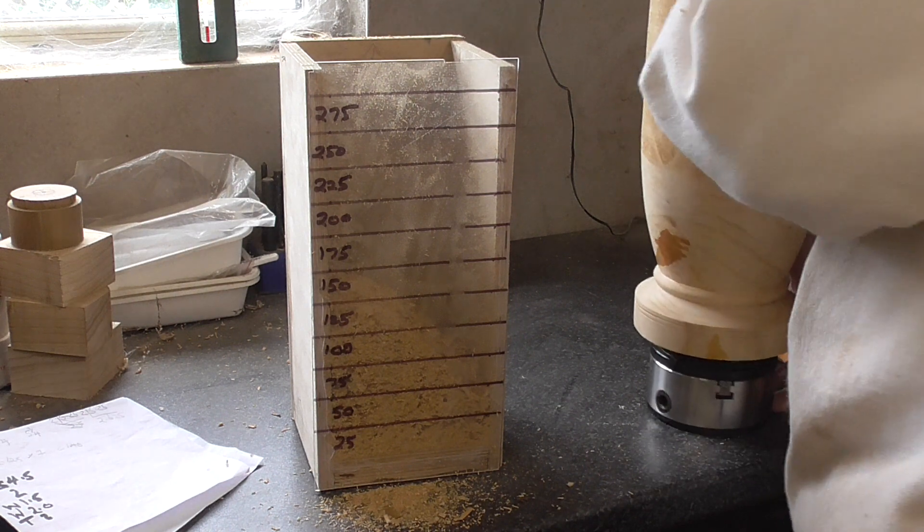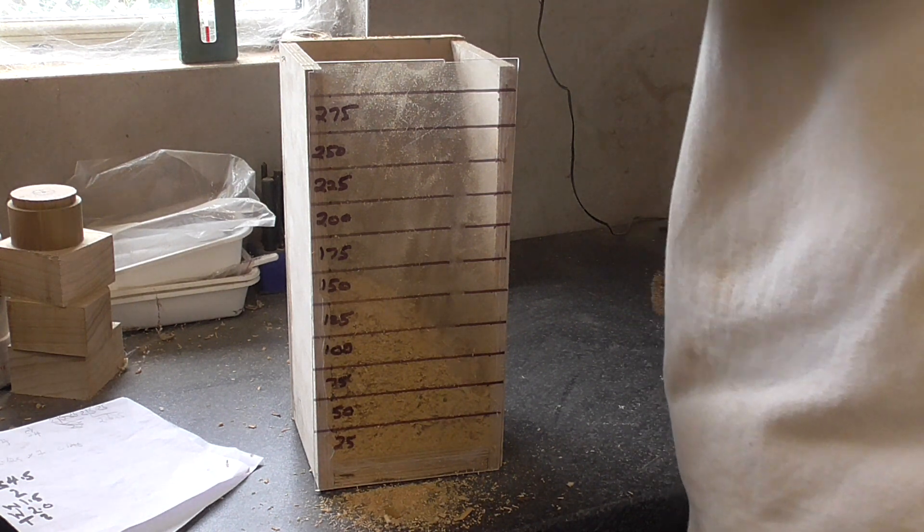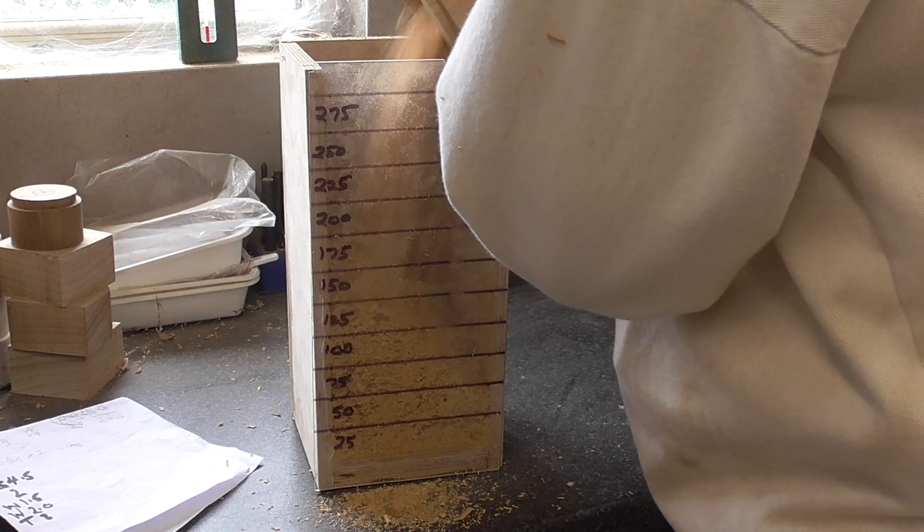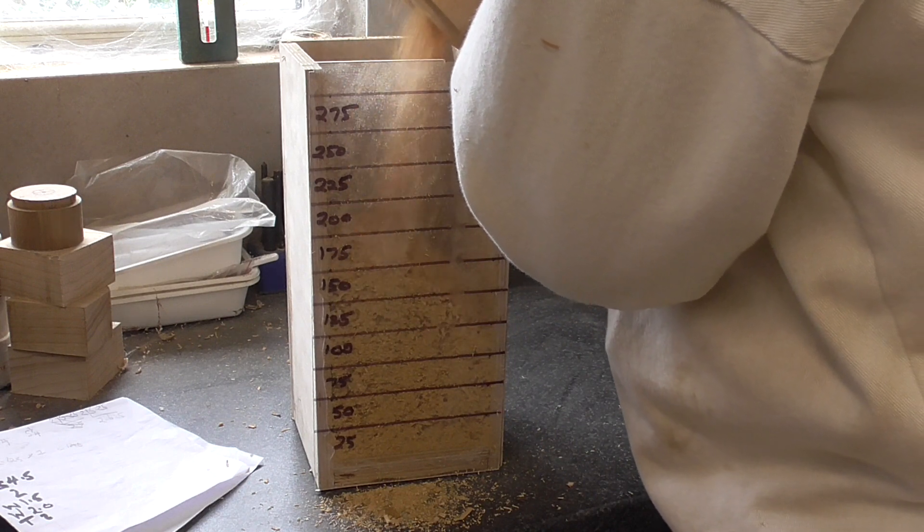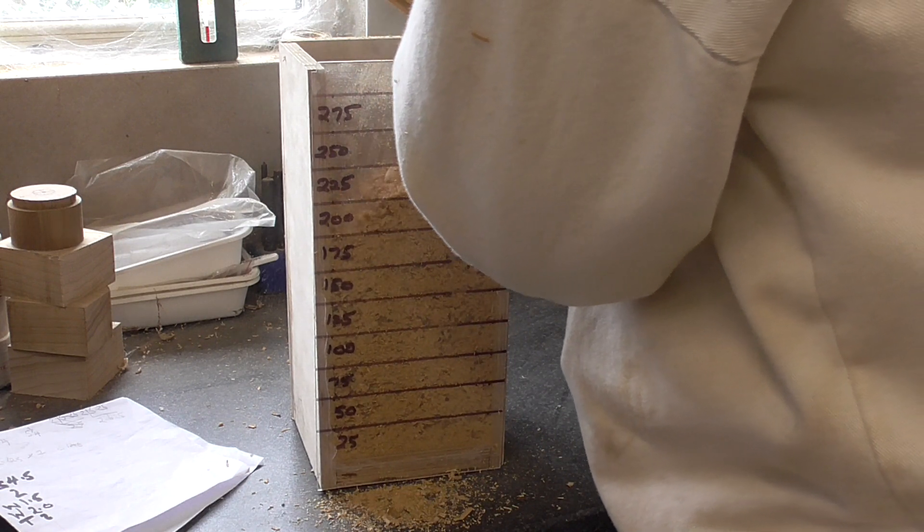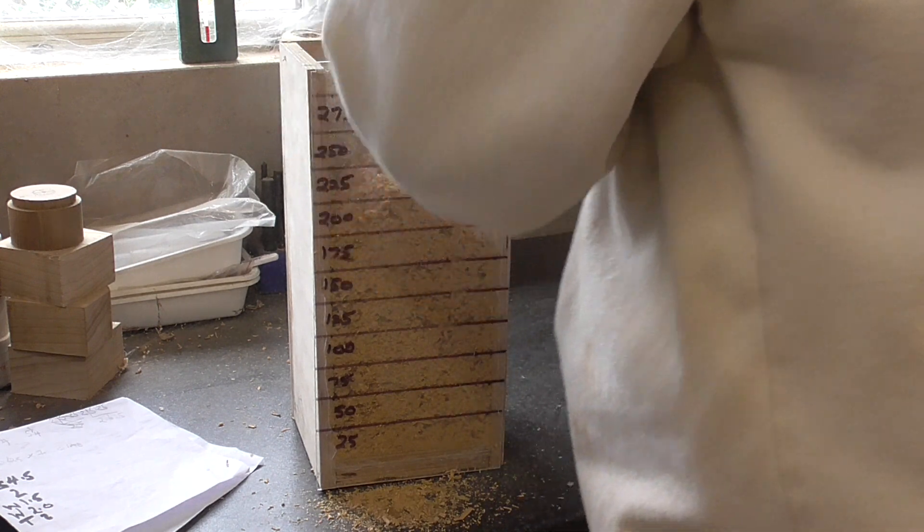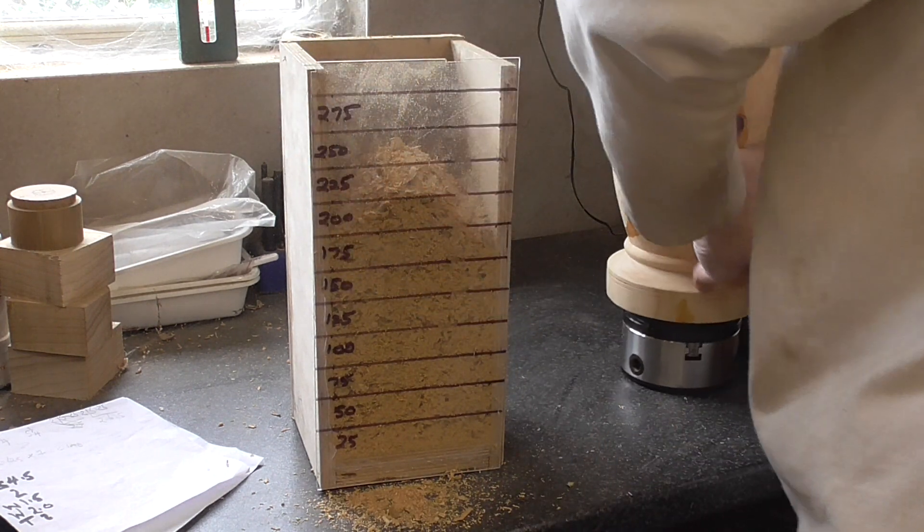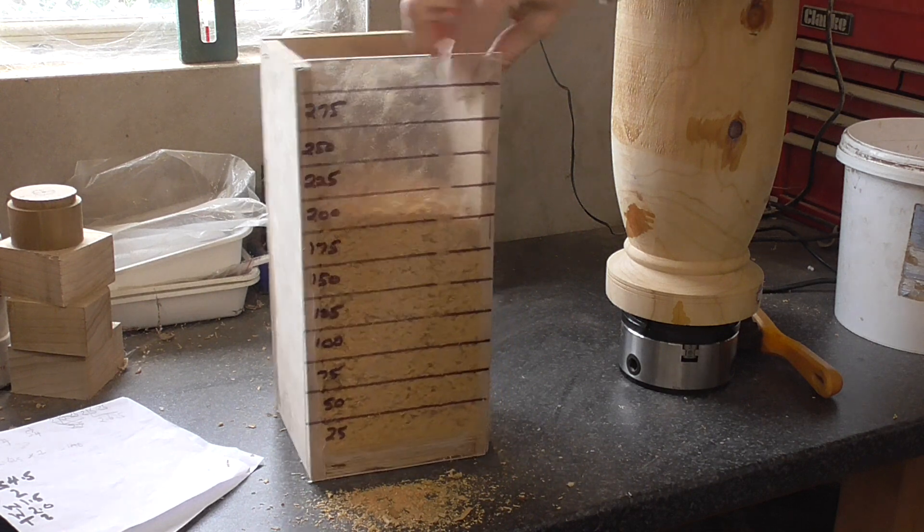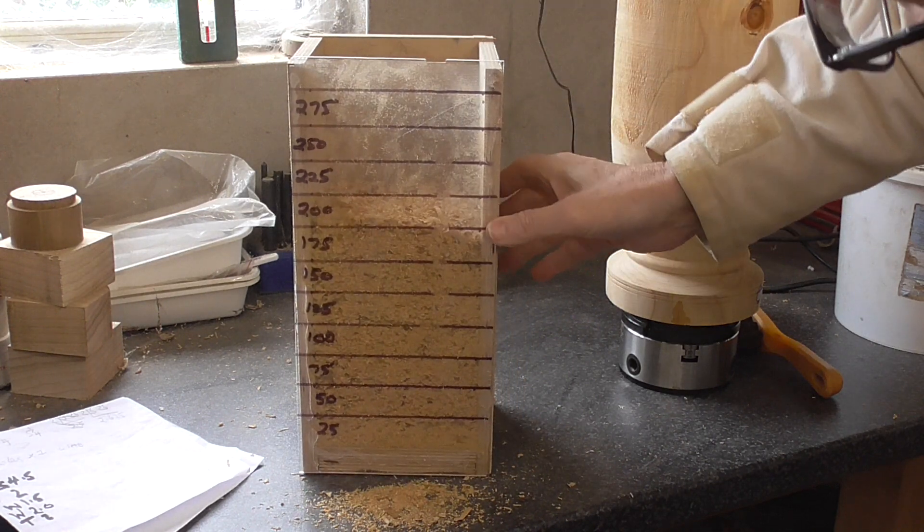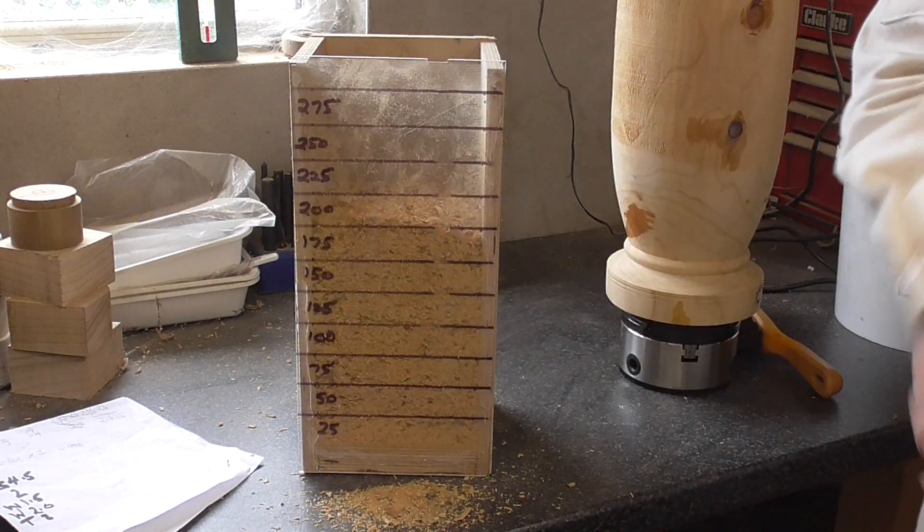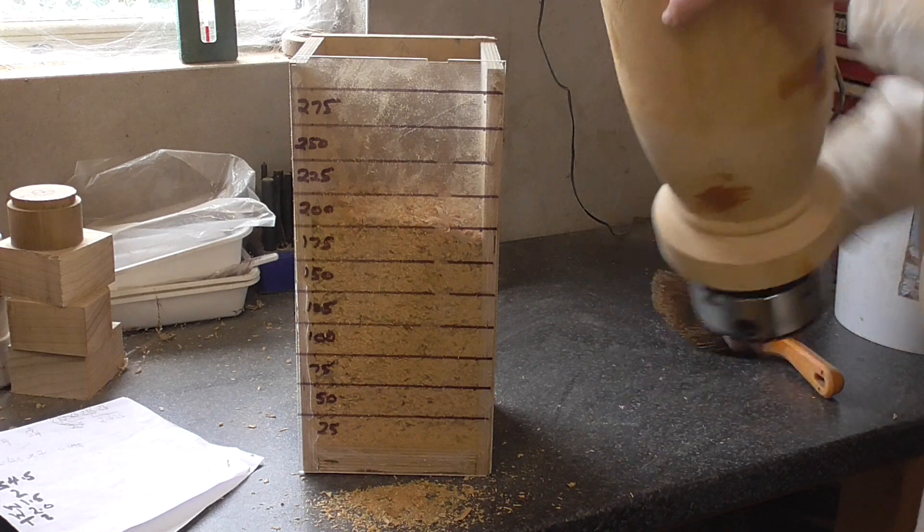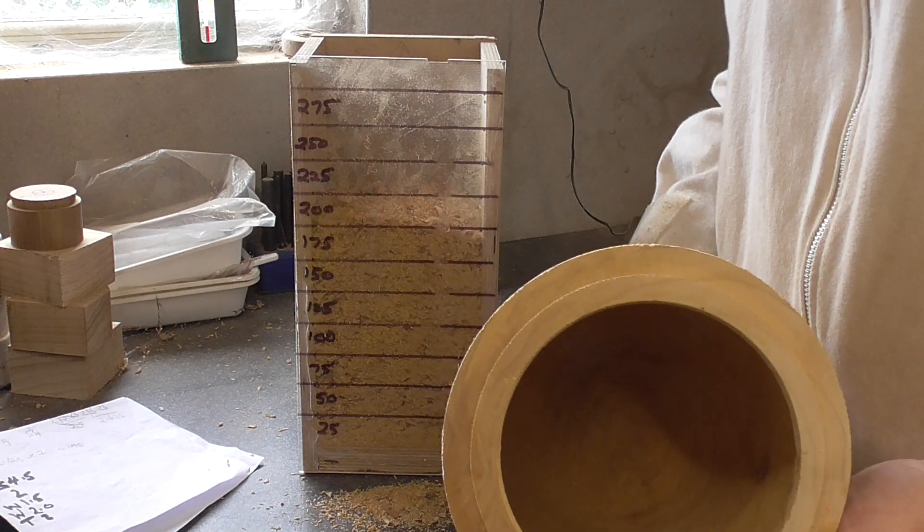That's it. So we'll just—what have I got? 175! That's it done, that's it done. That's the hollowing done. And as you can see inside there, it's all done. It's a nice wall thickness and it's fairly smooth.